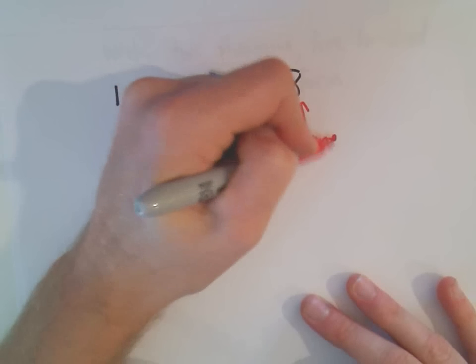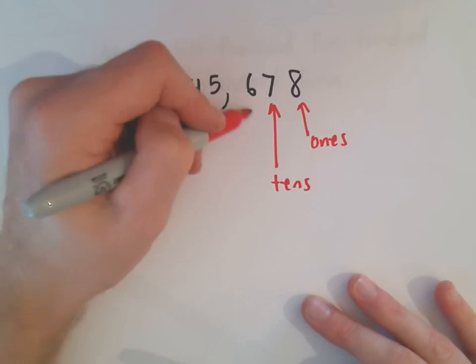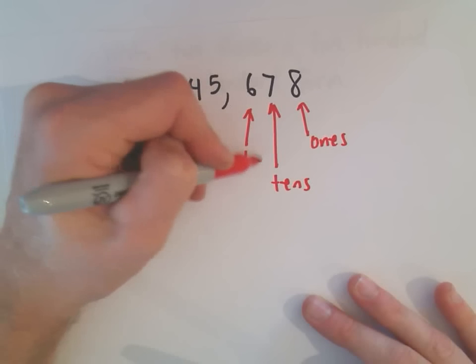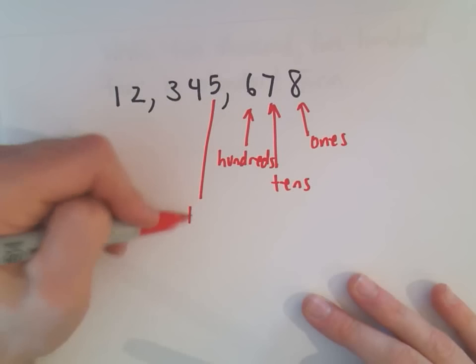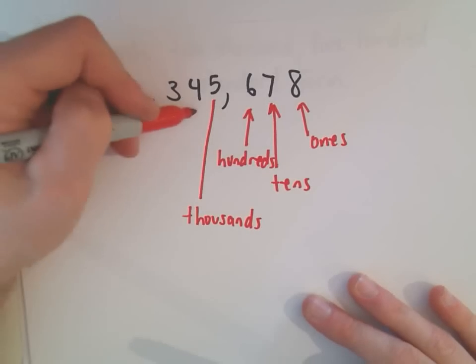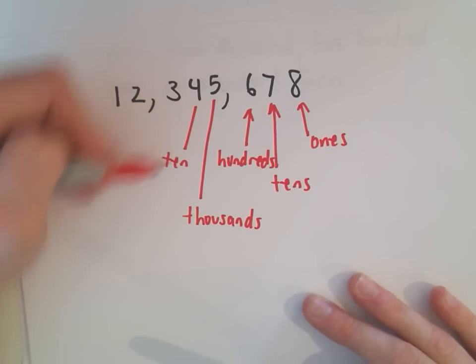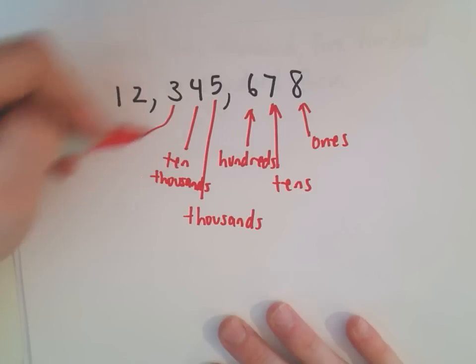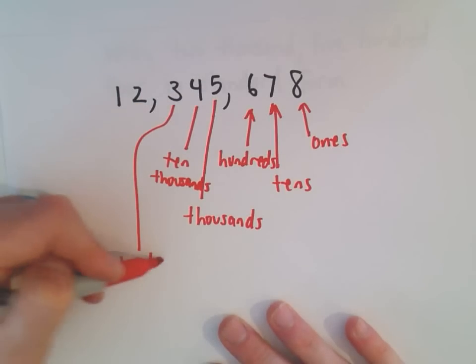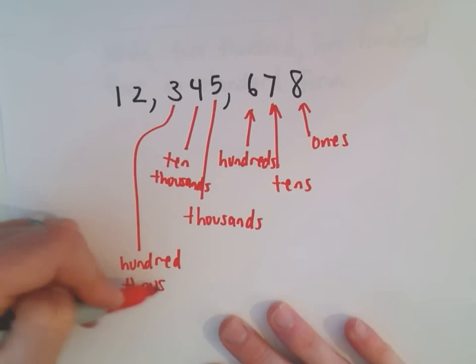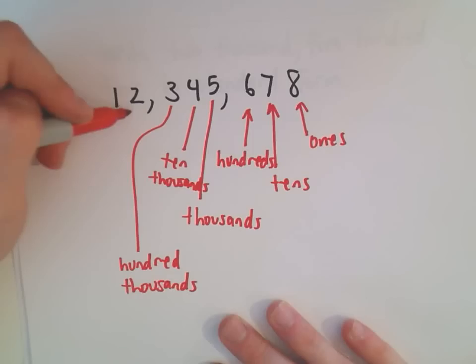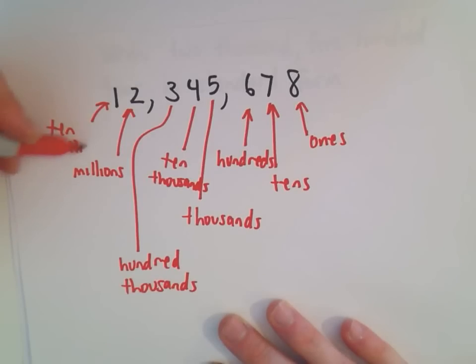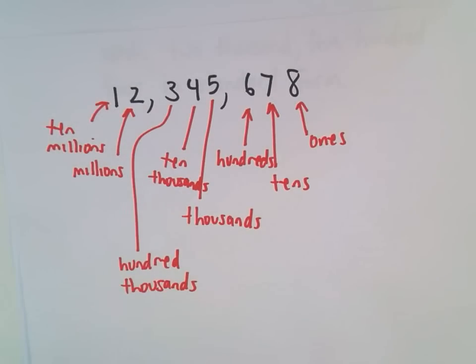So the 8 here is in the ones place. The 7 is in the tens. The 6 is in the hundreds. The 5 is in the thousands. The 4 would be in the ten thousands. Our 3 next would be in the hundred thousands. And if we kept going, our 2 will be in the millions place. And then our next digit would be in the ten millions. Okay, so I'm just going to reference this on my next two examples here real quickly.